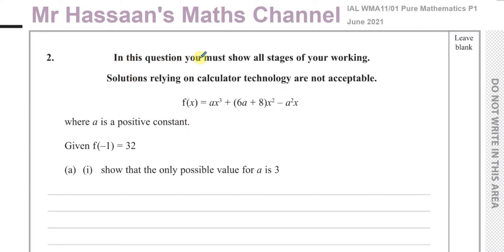It says: in this question, you must show all stages of your working. Now, this is in bold type. Solutions relying on calculator technology are not acceptable. Many students ignore these kinds of phrases in the paper, but they're very, very important. I'll explain why as we go through the question. A lot of students are going to lose marks in this type of question because of not following these instructions or warnings.